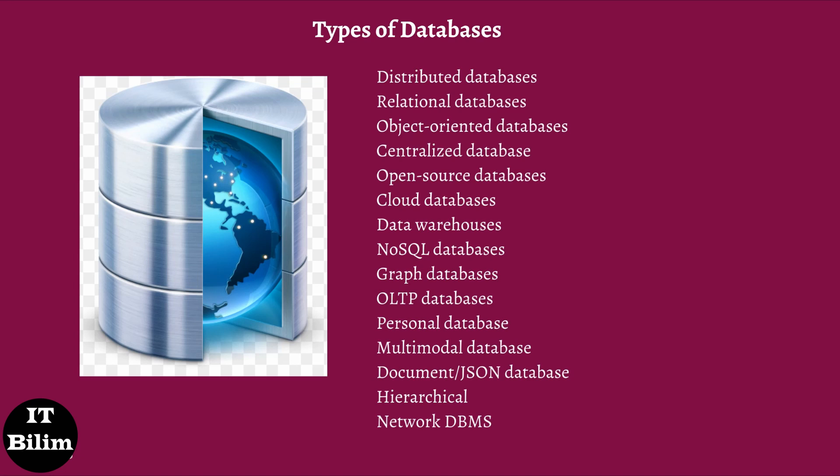Object-oriented databases: This type of database supports the storage of all data types. The data is stored in the form of objects. The objects held in the database have attributes and methods that define what to do with the data. PostgreSQL is an example of an object-oriented relational DBMS.